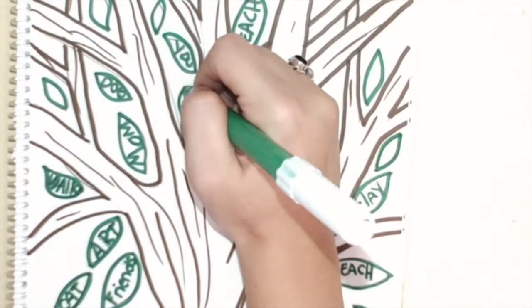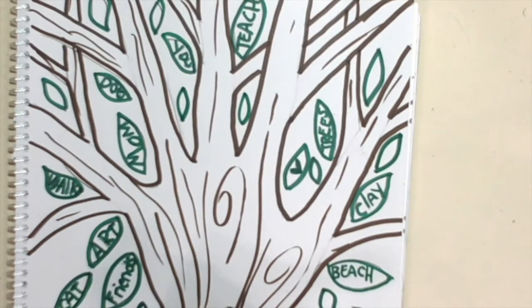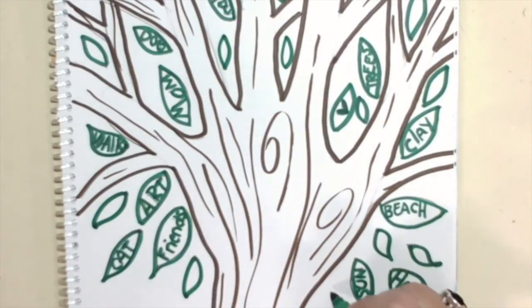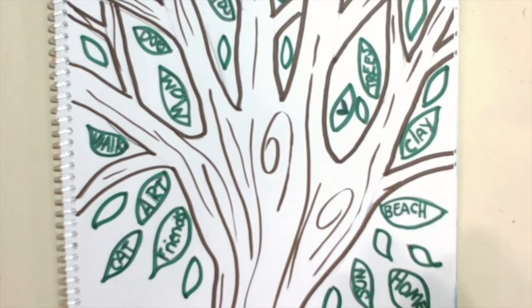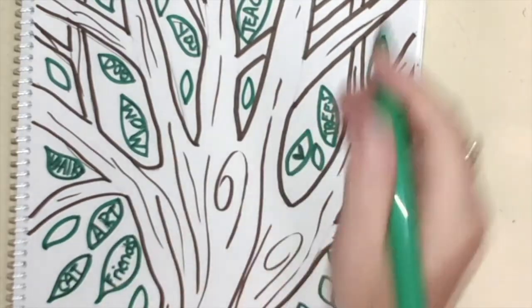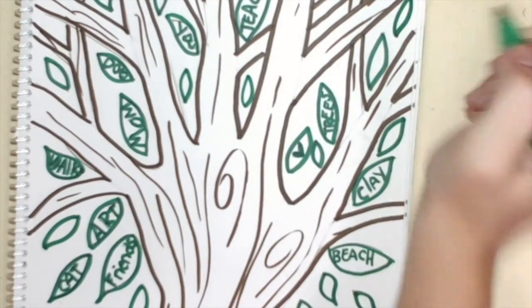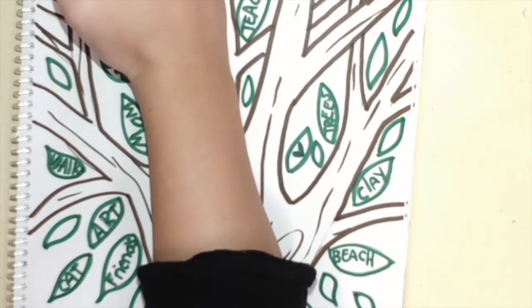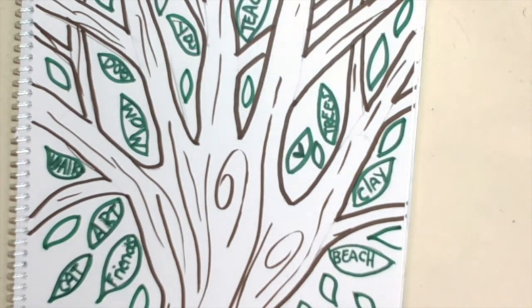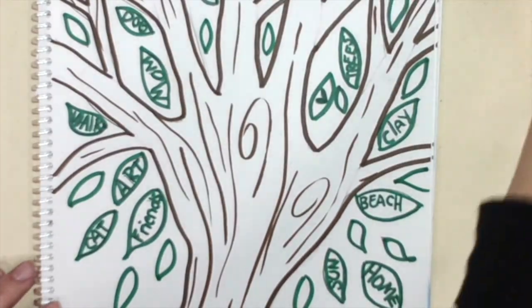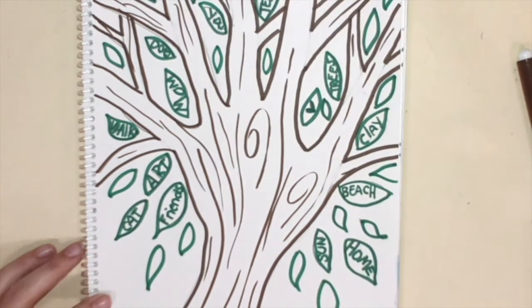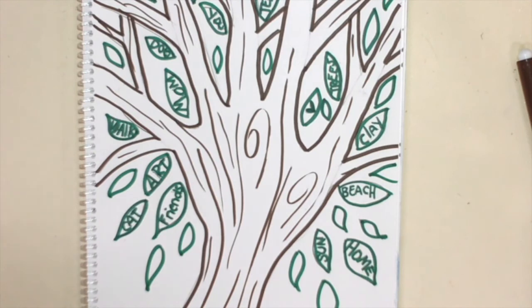I'm just going to draw some extra leaves with my marker until I feel like I'm done making all of my leaves. We are going to stop here for this lesson and we're going to pick up again on this next time.